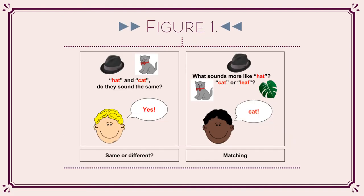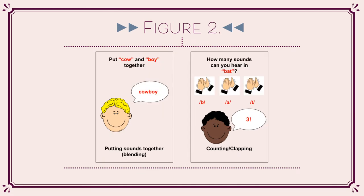Figure 1 shows examples of phonological awareness tests where children are given answers to choose from. In the two examples, children need to focus on the rhymes in words. Figures 2 and 3, which are shown on the next slide, show examples of tests where children need to give their own answer. In these examples, children need to pay attention to syllables and phonemes.